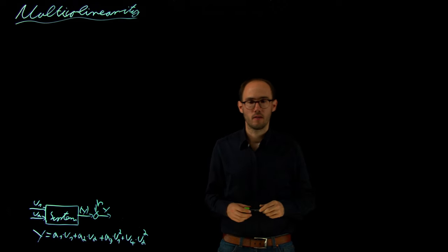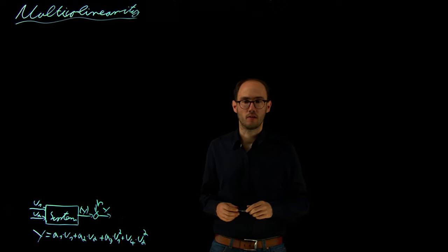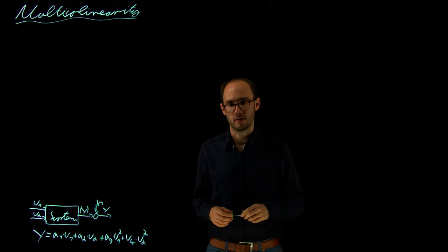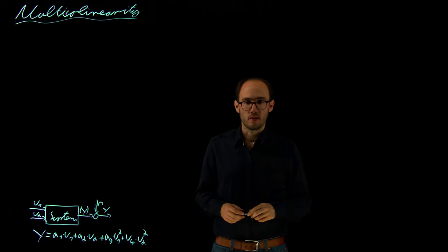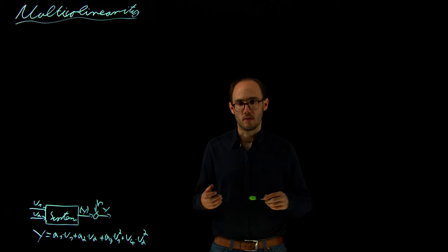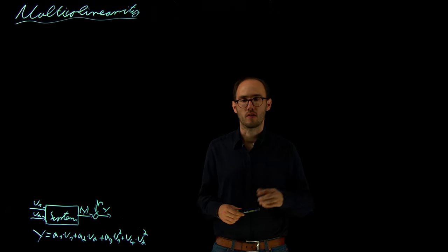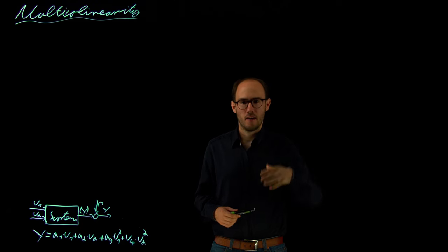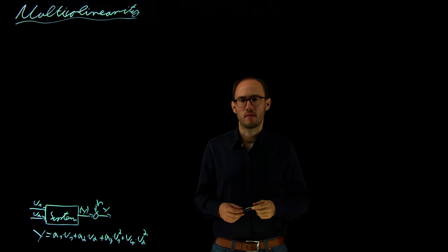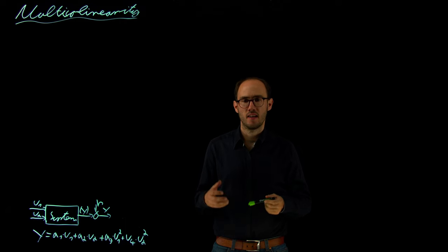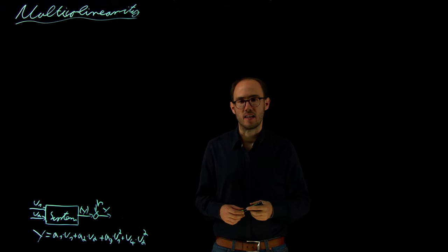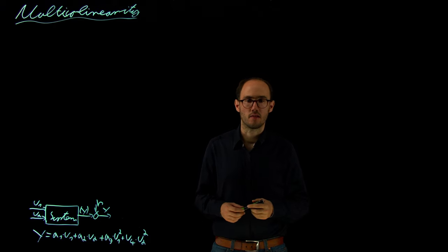Welcome. In this video, I would like to talk about multicollinearity and what issues can result from that. This topic is closely linked to our last video where we already discussed some of the properties of the ordinary least squares estimator, and we found that the data used to solve the OLS can have a significant impact in terms of the accuracy and certainty regarding the found parameters.